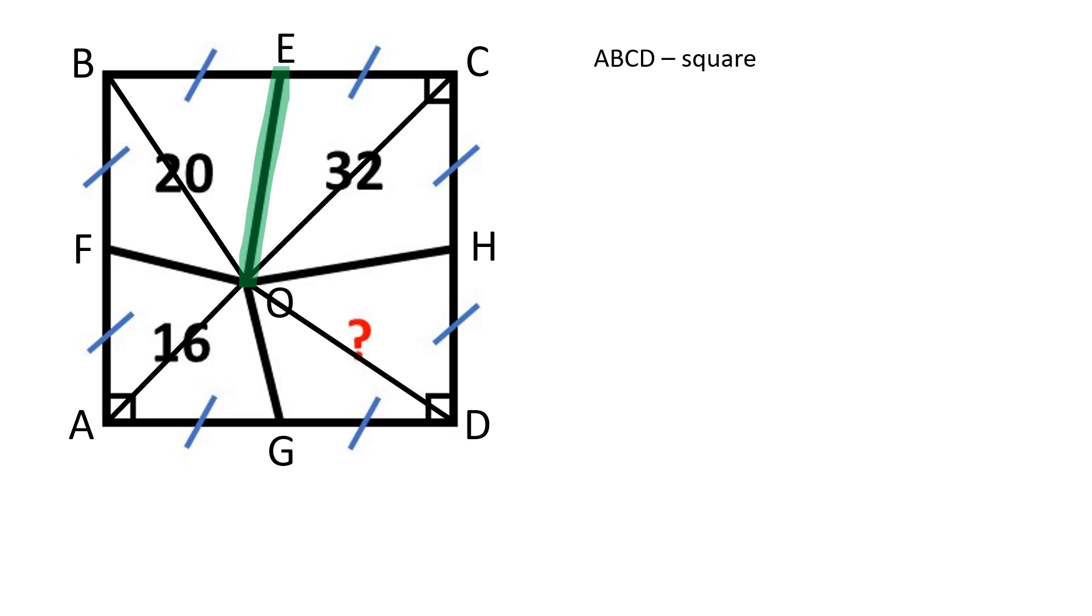The median of a triangle divides it into two triangles of equal areas. Therefore, the blue triangles have equal areas.